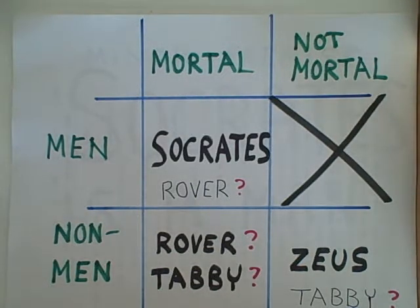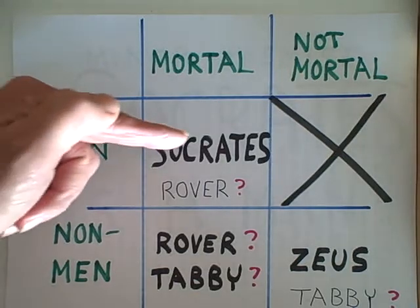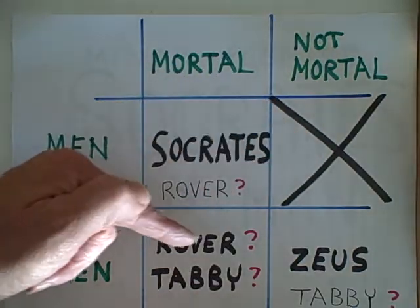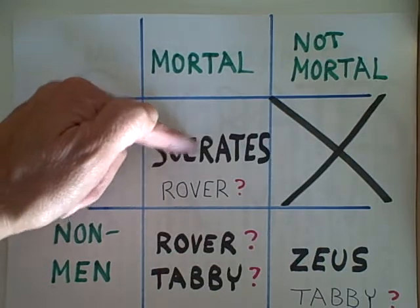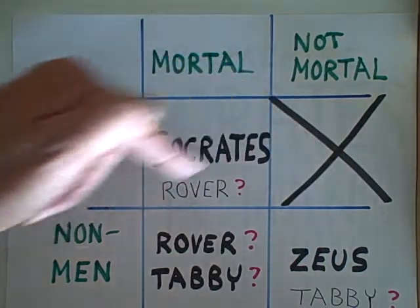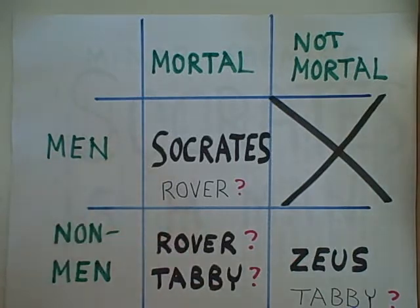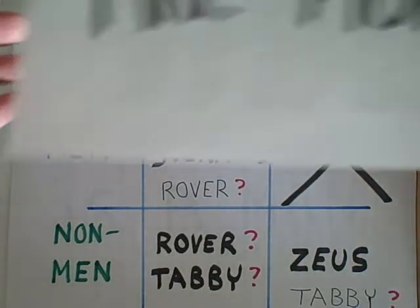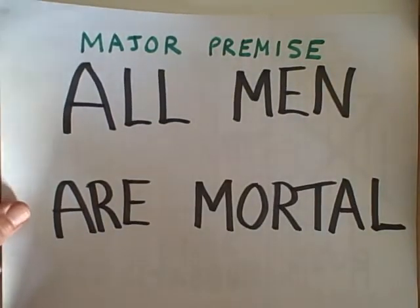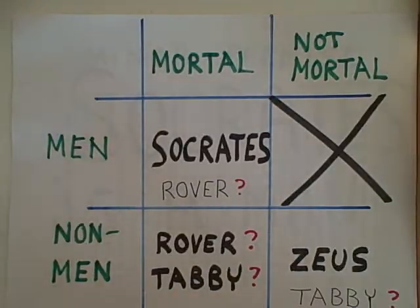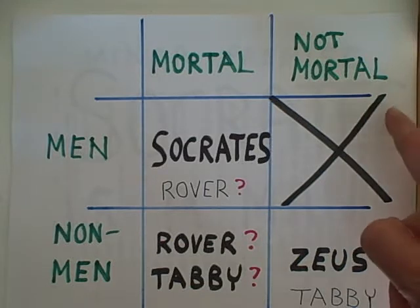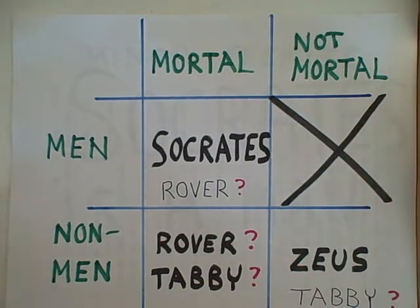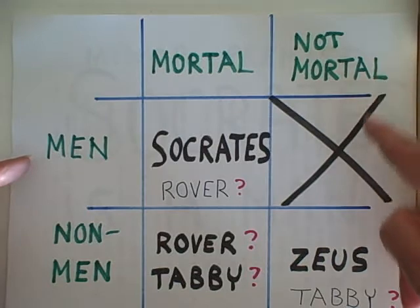This gives us four different cells to classify any subject in: men who are mortal, men who are not mortal, non-men who are mortal, and non-men who are not mortal. Now if we go back to the major premise — all men are mortal — that tells us that one of these four cells is going to be empty. We're going to put a big X because there are no men who are not mortal.